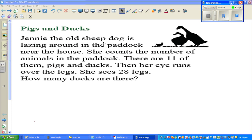Jenny the old sheep dog is lazing around in the paddock near the house. She counts the number of animals in the paddock. There are 11 of them, pigs and ducks. So this paddock has pigs and ducks. This only shows ducks, there are some pigs too.